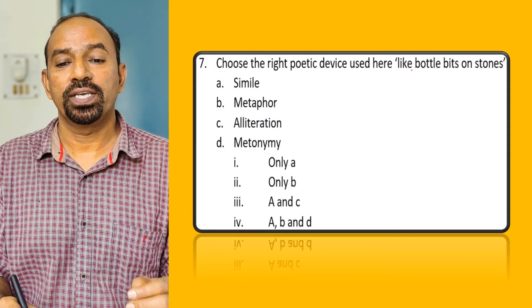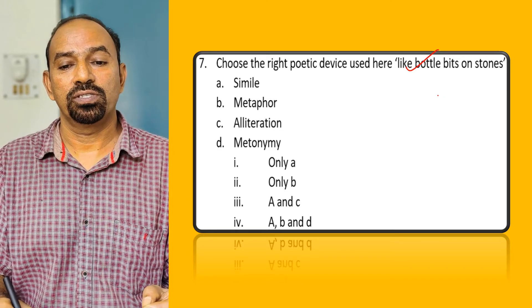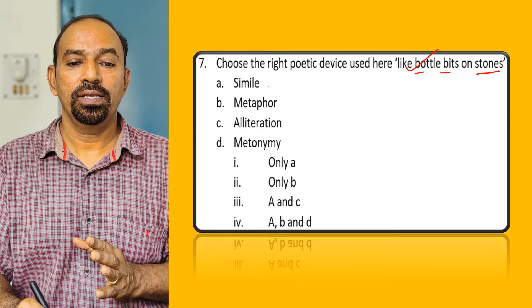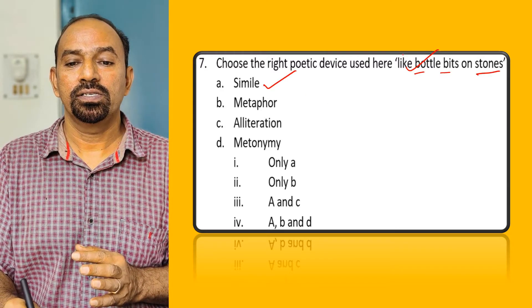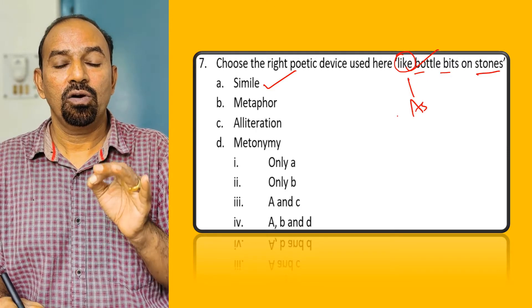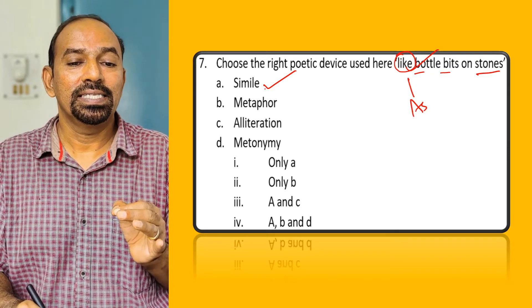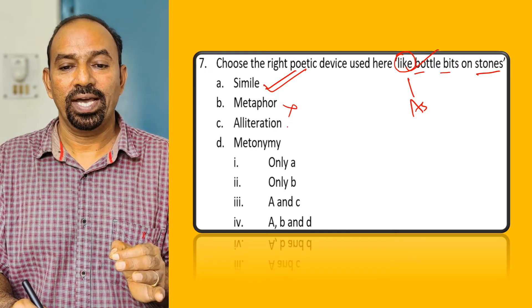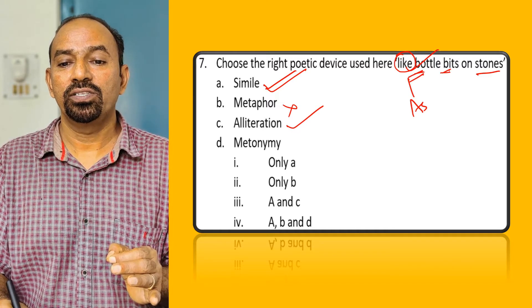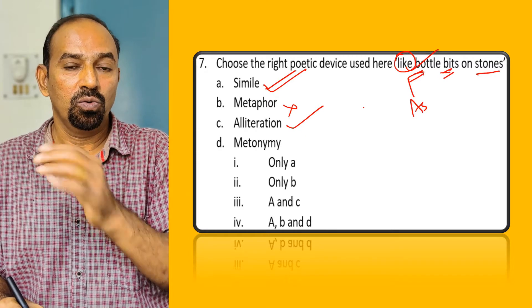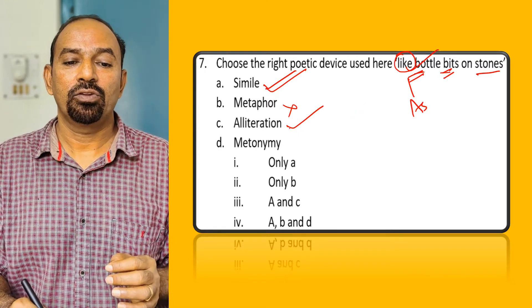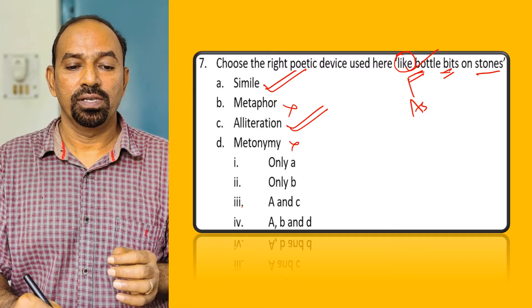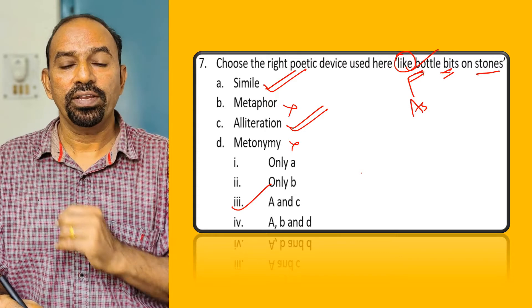Question seven: Choose the right poetic device in 'like bottle bits on stones'. Simile is present because it starts with 'like' — 'like' or 'as' is used for comparison, making it a simile, not a metaphor. Alliteration is also there because the B sound is repeated at the beginning of consecutive words. So A and C — simile and alliteration — are correct. The third option is right.